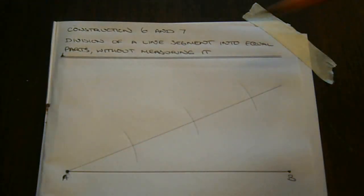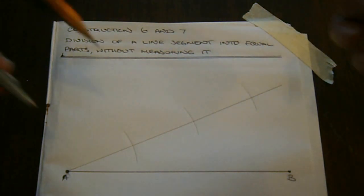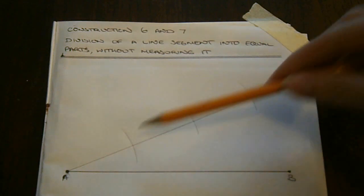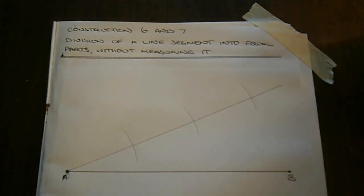If you needed more divisions, you would just repeat this process using probably a smaller compass width for this example, and do however many arcs that you need to divide the line segment. So here we need to divide it into three parts, so I've got three arcs.